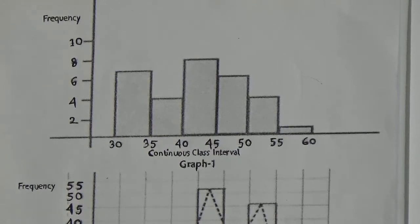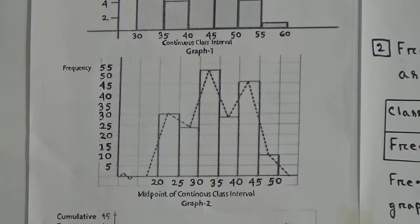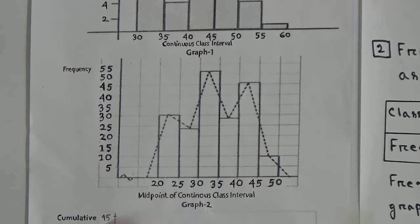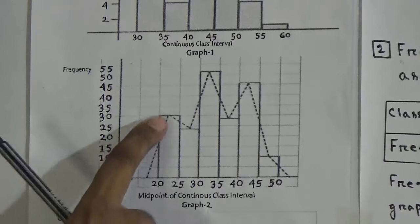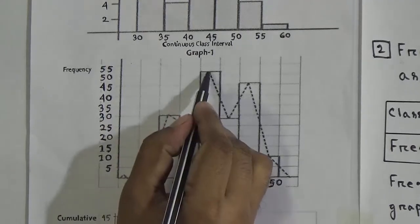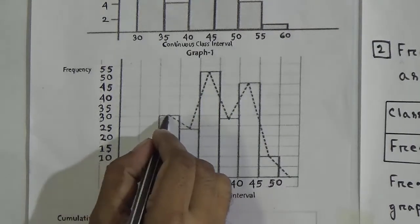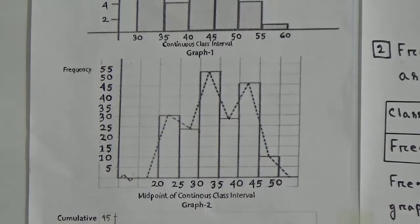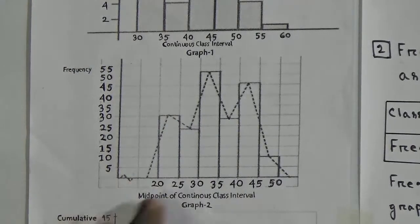Now the second graph. Here along the x-axis the midpoint of continuous class intervals exists, and along the y-axis frequency exists. The midpoints of class intervals are joined — this is one midpoint, this is another, and so on. All points are joined so that one bounded region is made, and it has more than four line segments. So we can say that this is the graph of a frequency polygon.